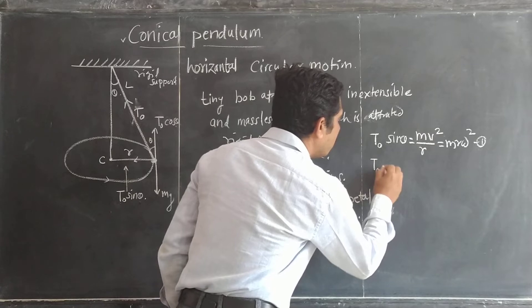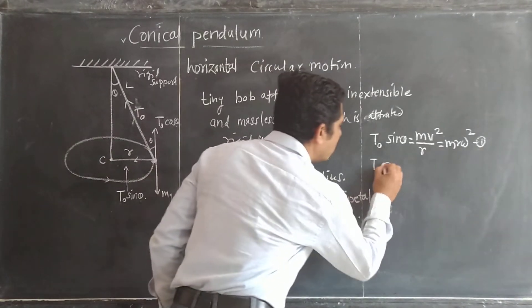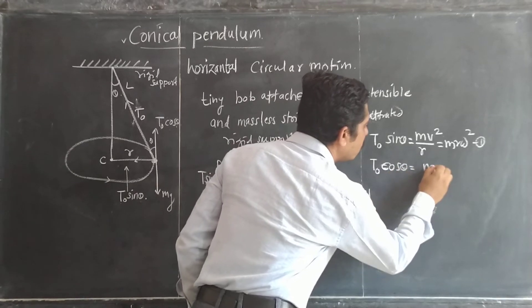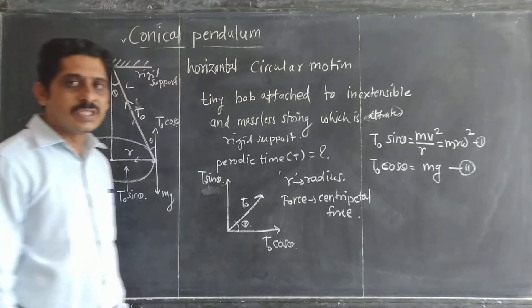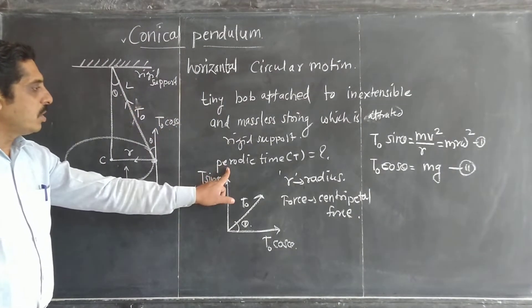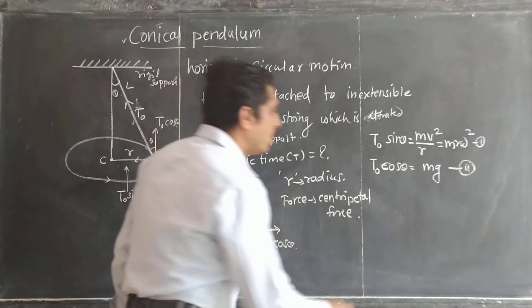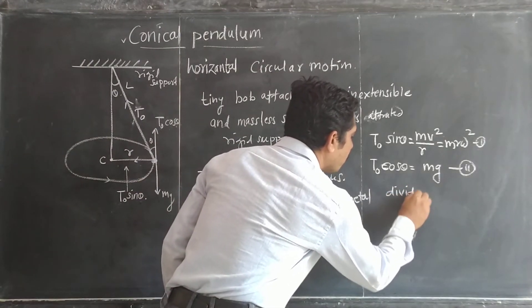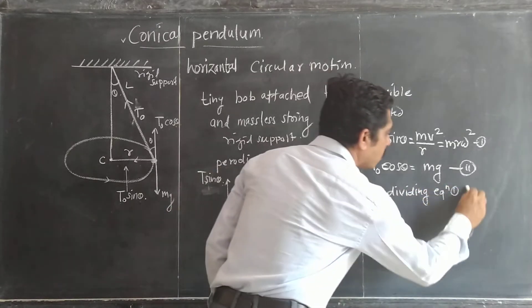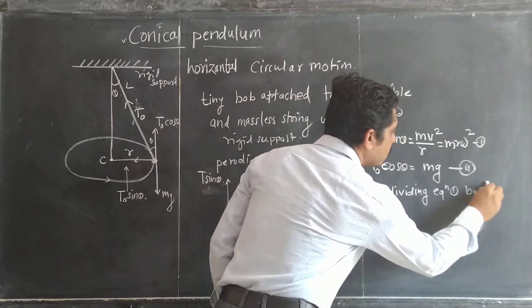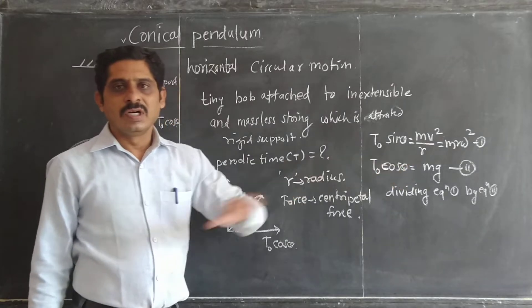The second equation: T₀ cos theta must be equal to mg. This is equation number two. To find the periodic time of the conical pendulum, we divide equation one by equation two.